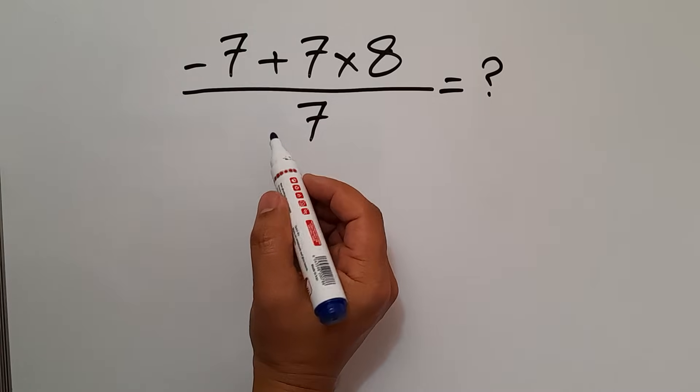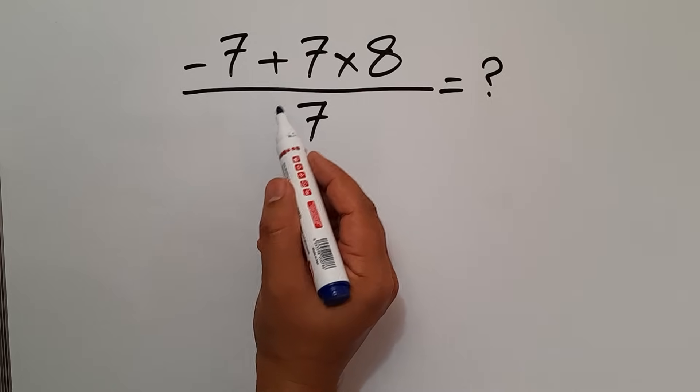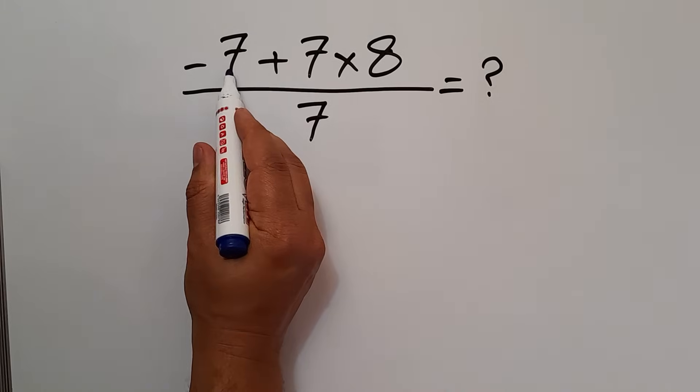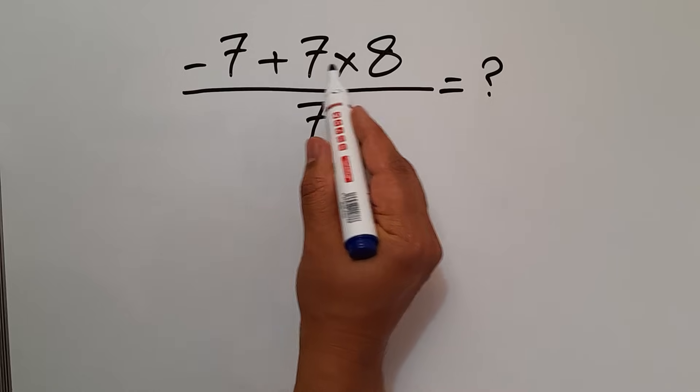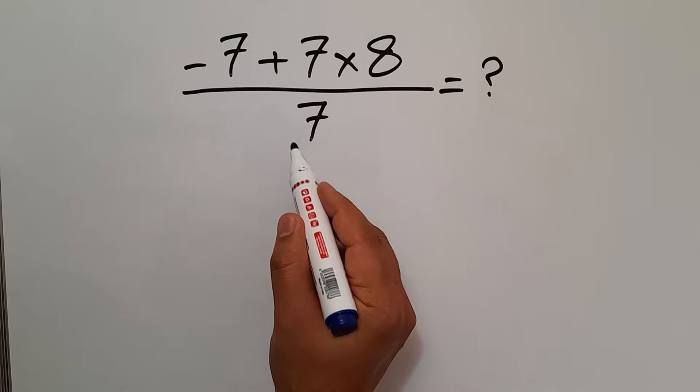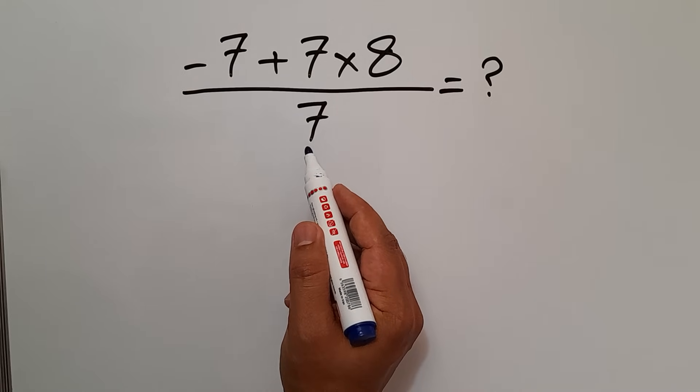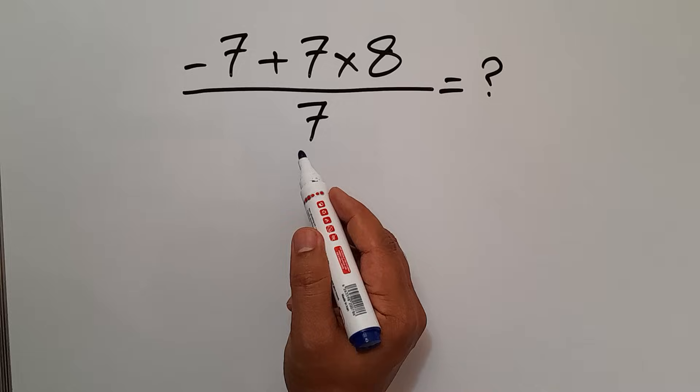Hey guys, welcome to MathJoy. In this video, we want to find the value of this fraction. Negative 7 plus 7 times 8 over 7. Are you ready to solve? Let's go and get started.